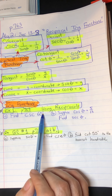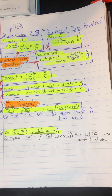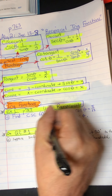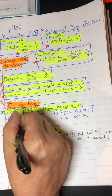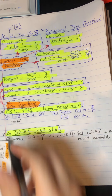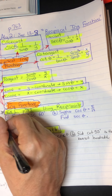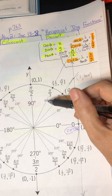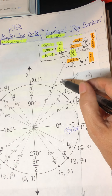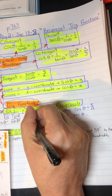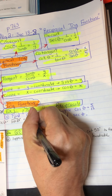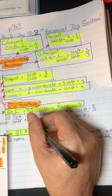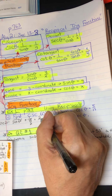Example 1: find the cosecant of 60 degrees. First, remember cosecant is the reciprocal of sine. So to find cosecant of 60 degrees, we first find the sine of 60 degrees, then take 1 over that. Looking at the unit circle, the sine of 60 degrees is the y-coordinate, which is square root of 3 over 2. So cosecant of 60 degrees equals 1 over (square root of 3 over 2), which simplifies to 2 over the square root of 3.